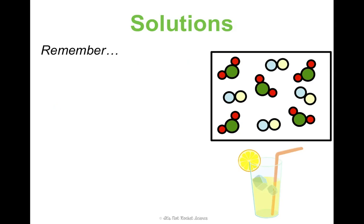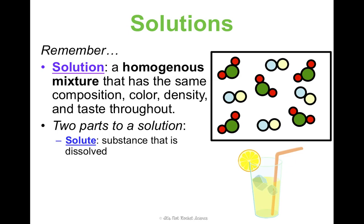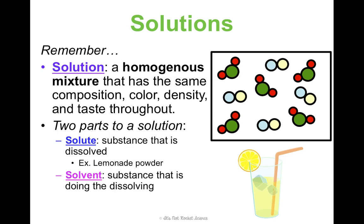Hopefully you remember from concept one when we talked about classifying matter — solutions are homogeneous mixtures. They have the same composition, color, density, and taste throughout. In concept two I gave you a little bit more information: there are two parts to a solution, the solute and the solvent. The solute is the substance being dissolved and the solvent is the substance doing the dissolving. So in lemonade, the solute is the powder and the solvent is the water. From a molecular standpoint, it's kind of evenly dispersed throughout.